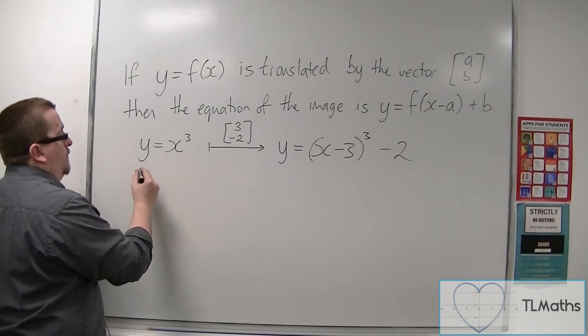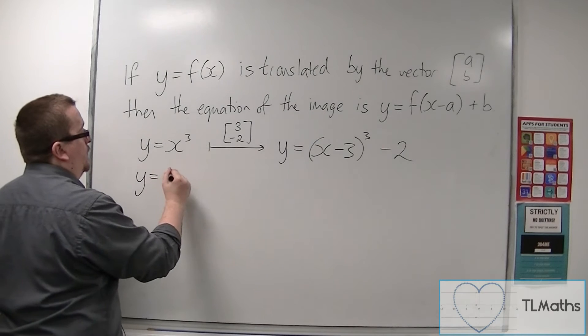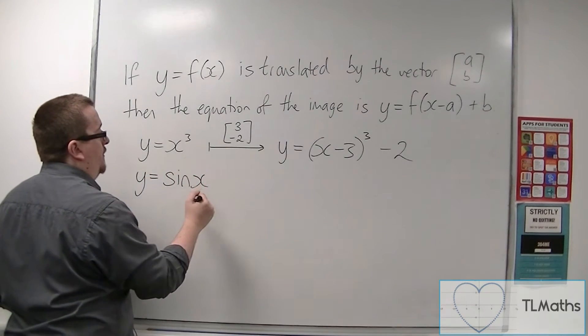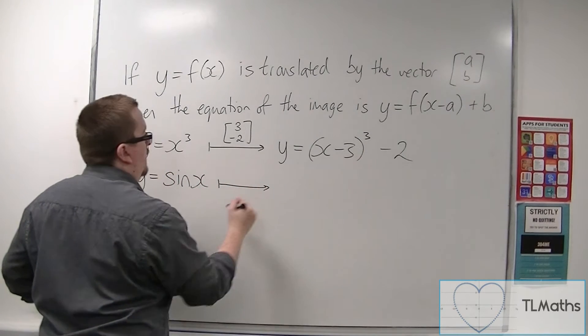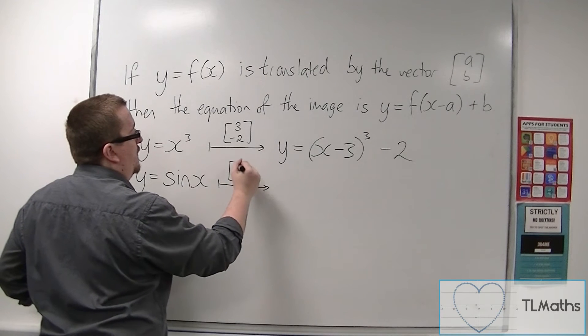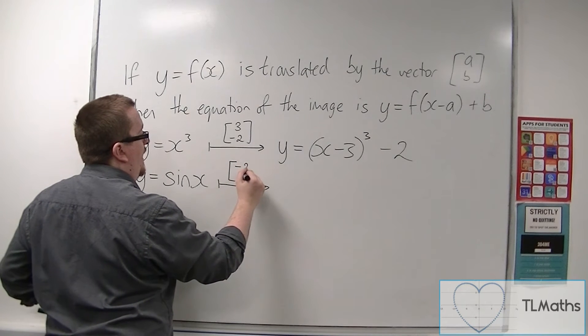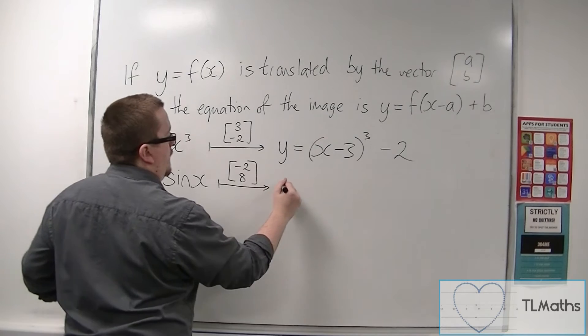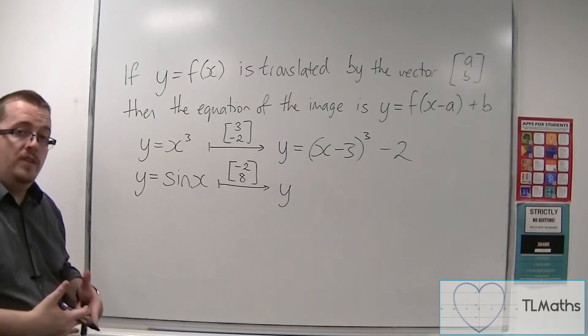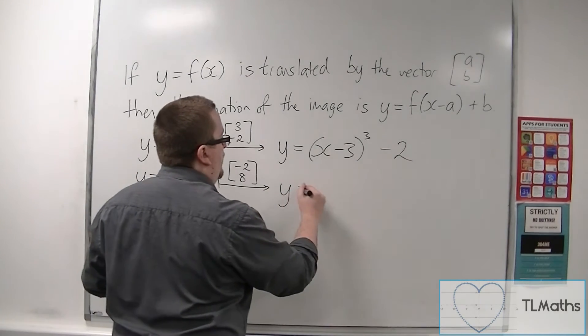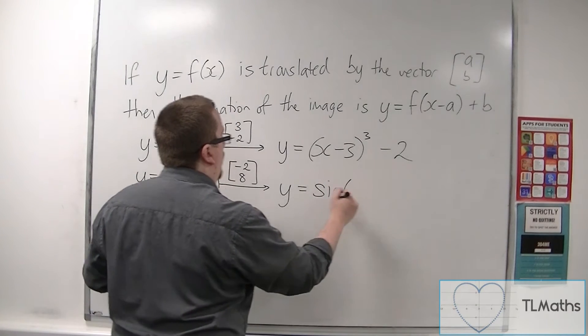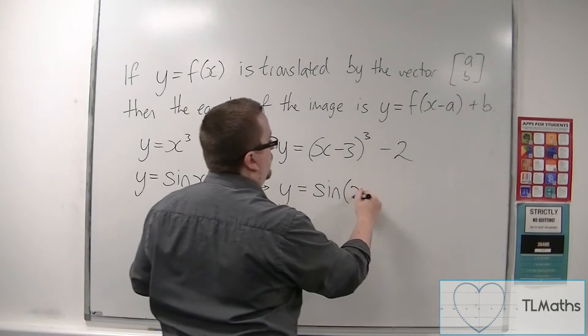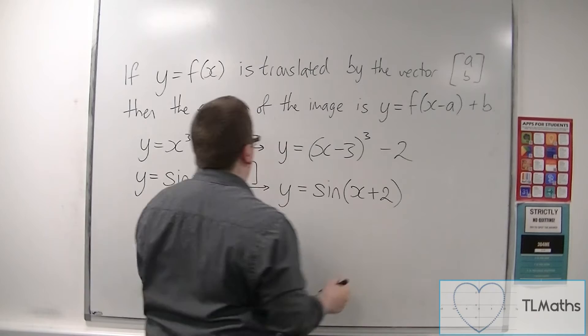Another example: y equals sin x. Let's say that's translated by the vector (-2, 8). Then the new equation, the equation of its image, is y equals sin of (x plus 2) plus 8.